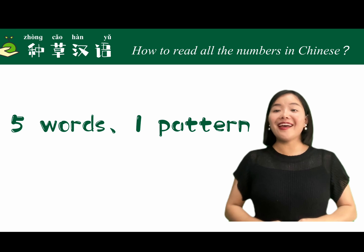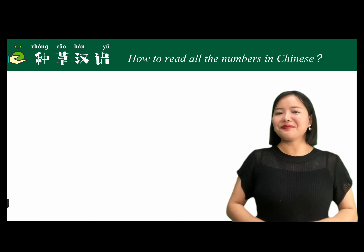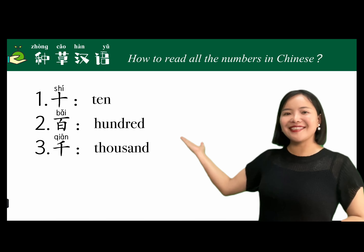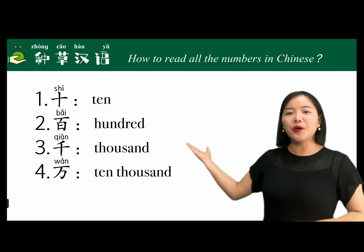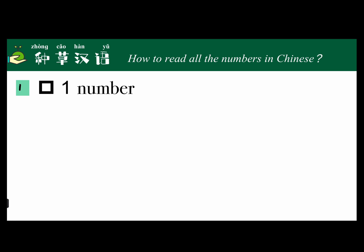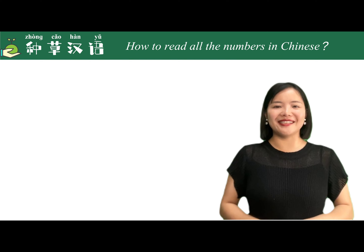But don't worry. In this video I will introduce you to five words and one pattern. After learning these, I'm sure you can easily master the pronunciation of all numbers. The five words are: ten (十 shí), hundred (百 bǎi), thousand (千 qiān), ten thousand (万 wàn), and one hundred million (亿 yì). Let's first review the pronunciation of digits 0 through 9.